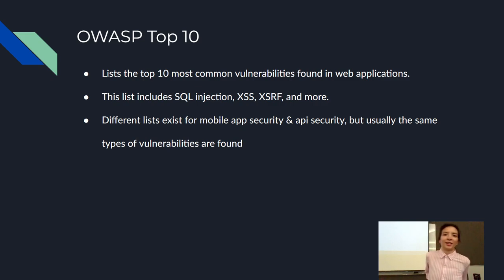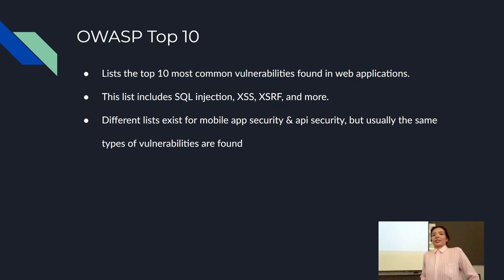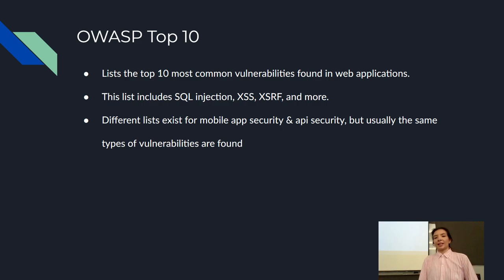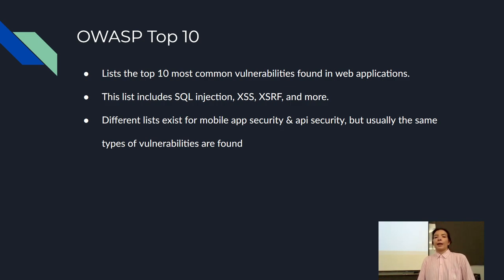The OWASP Top 10 covers the most common vulnerabilities in web applications. It includes SQL injection, cross-site scripting — often abbreviated as XSS — and cross-site request forgery, abbreviated as XSRF, and more.